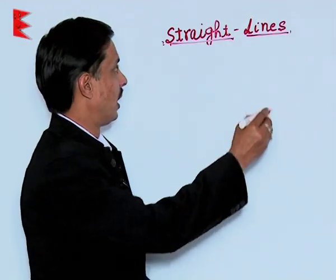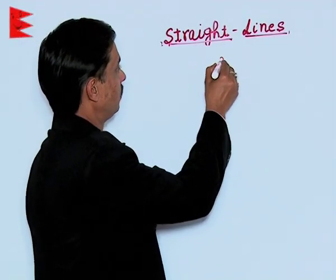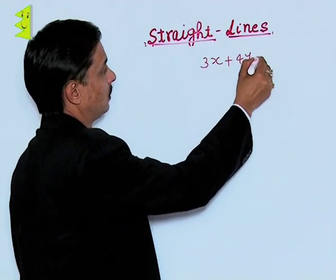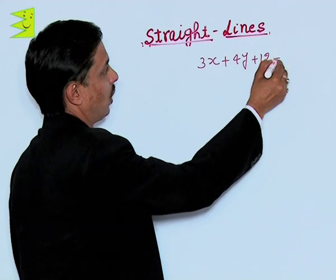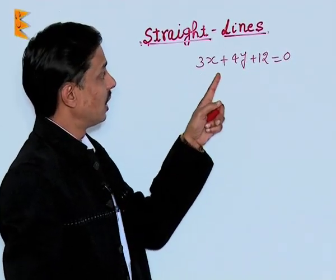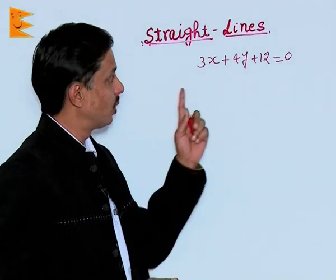If I take an example, 3x plus 4y plus 12 equals 0, this is the equation of a straight line in two variables.